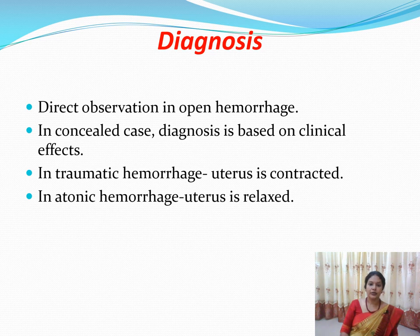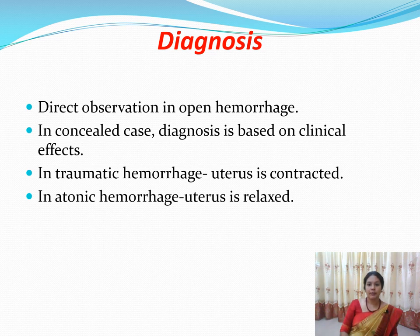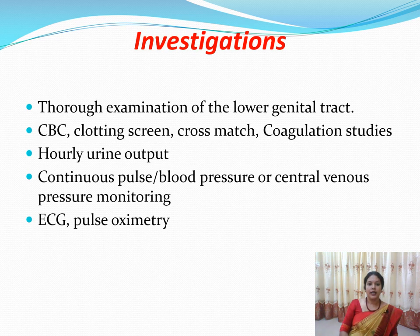Diagnosis includes direct observation of bleeding through the vagina. If there is concealed bleeding not visible through the vagina, look for clinical features such as falling BP, rising pulse rate, shallow respiratory rate, pallor, and restlessness. In traumatic hemorrhage, the uterus may be contracted because bleeding may be from the cervix or vagina. In atonic hemorrhage, the uterus will be relaxed and not contracted.